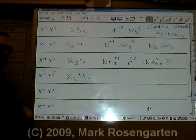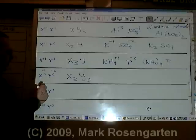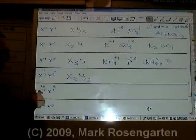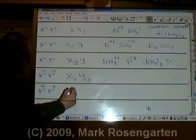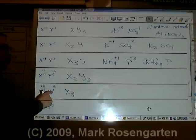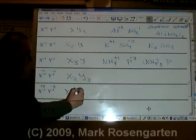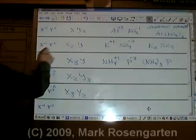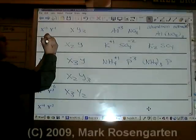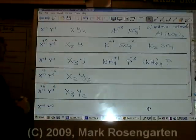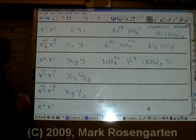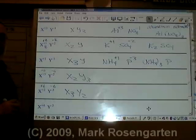The same thing goes down here. Two times three is six. We need plus six and minus six when we're done with the formula. It takes three plus twos to make plus six. It takes two minus threes to make minus six. And X₃Y₂ is our formula. Notice we can do that with any of these. One times two is two. We need this to be plus two. We need that to be minus two. Therefore, we need two plus ones to make that work. So, you can apply this rule to any of the ones that we've done before.